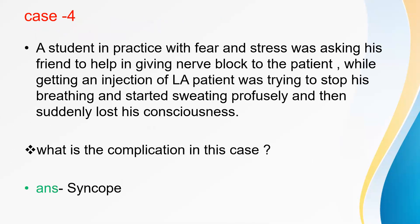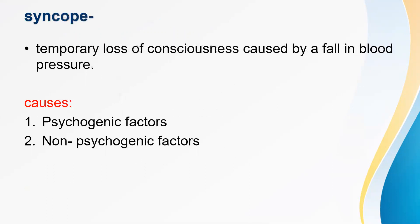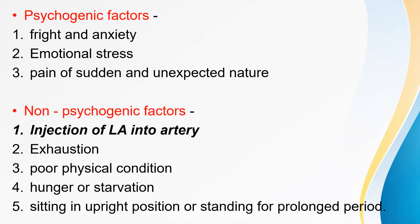Case 4. A dental student with fear and stress asked a friend to help give a nerve block to a patient. While receiving the injection of local anesthesia, the patient tried to stop breathing, started sweating profusely, and suddenly lost consciousness. The complication is syncope — a transient loss of consciousness caused by a fall in blood pressure. Causes are psychogenic factors such as fright, anxiety, emotional stress, and sudden unexpected pain; and non-psychogenic factors such as injection of LA into an artery, exhaustion, poor physical condition, hunger or starvation, and prolonged upright or standing position.